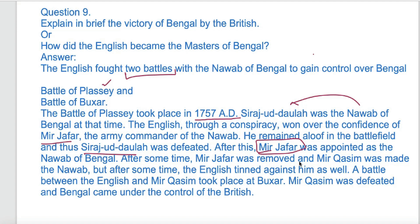After some time, Mir Jafar was removed and Mir Qasim was made the ruler and Nawab. But soon the English turned against him as well, and a battle between the English and Mir Qasim took place at Buxar. Mir Qasim was defeated at Buxar, and then Mir Jafar became the Nawab once again.